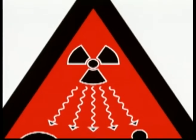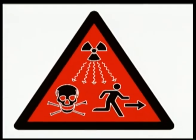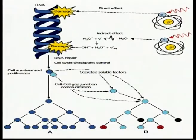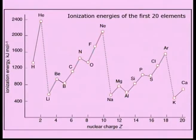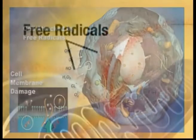Ionizing radiations, which are mostly concerning with pollution, have great energy content and this energy can ionize atoms and molecules both. By getting energy from radiations, electrons of an atom are separated, and this is called ionization. Ionization of a molecule yields charged and uncharged fragments. Uncharged fragments are called free radicals.